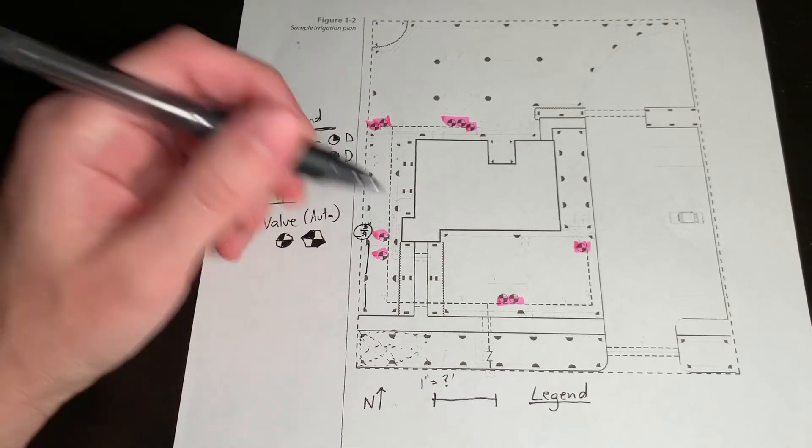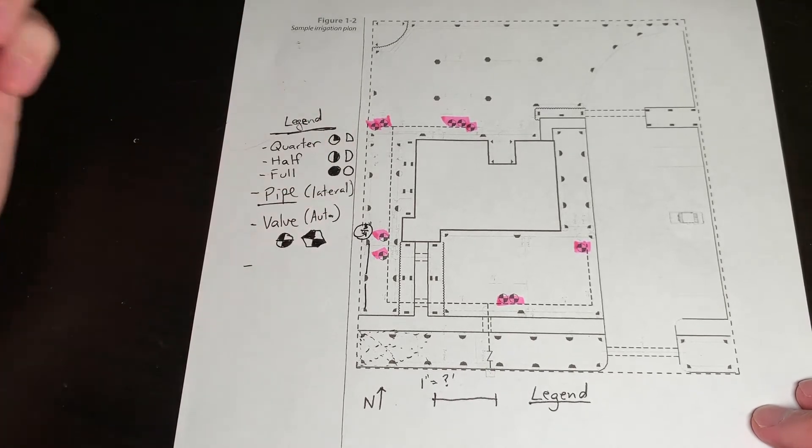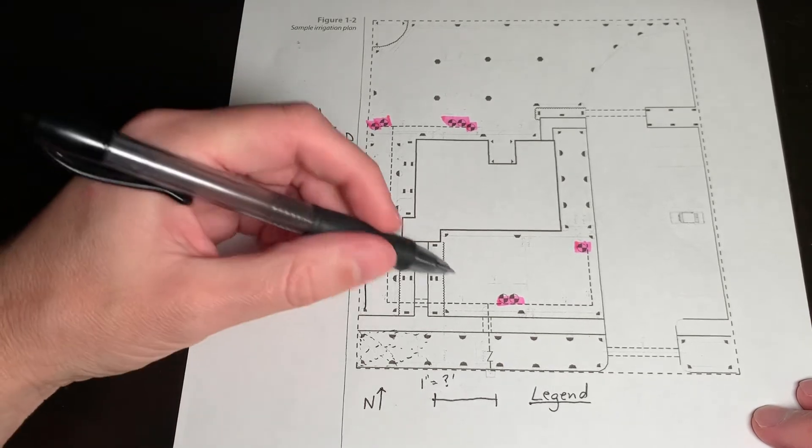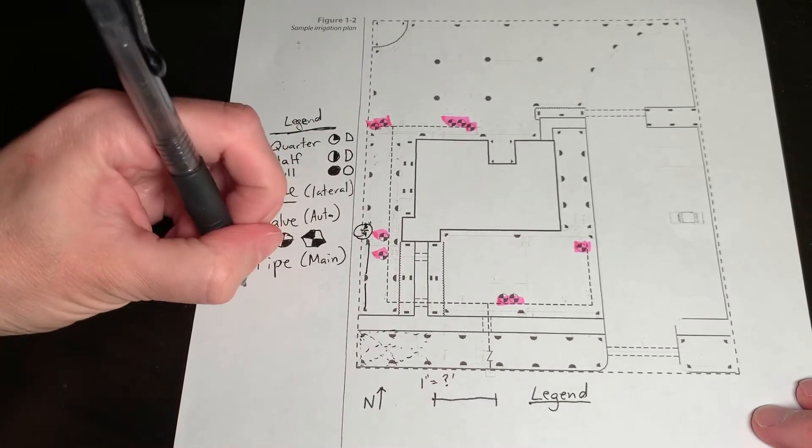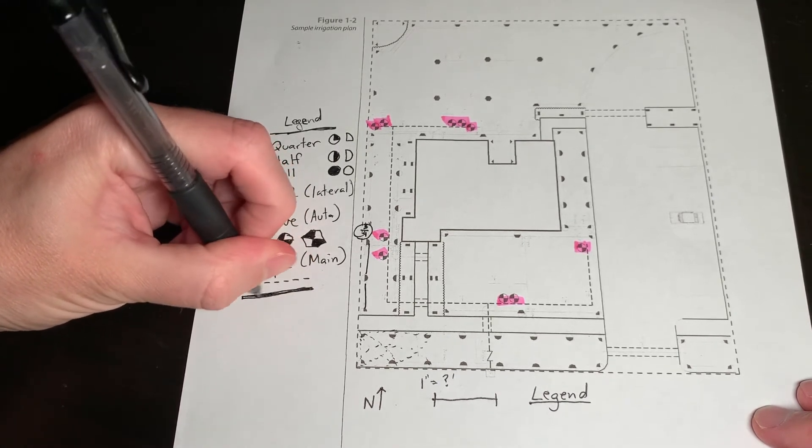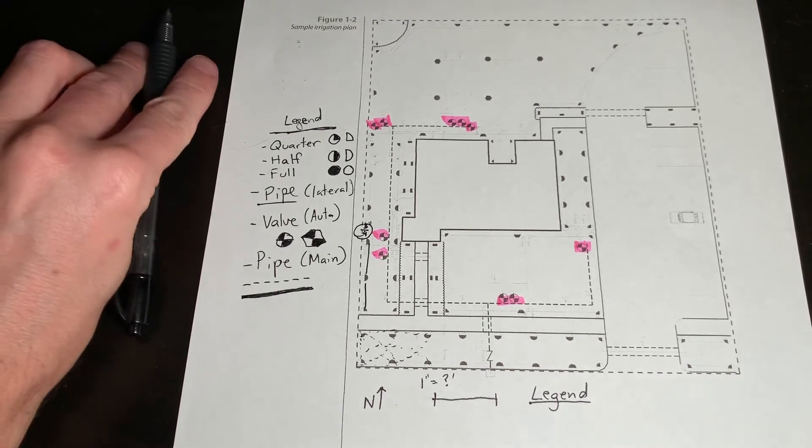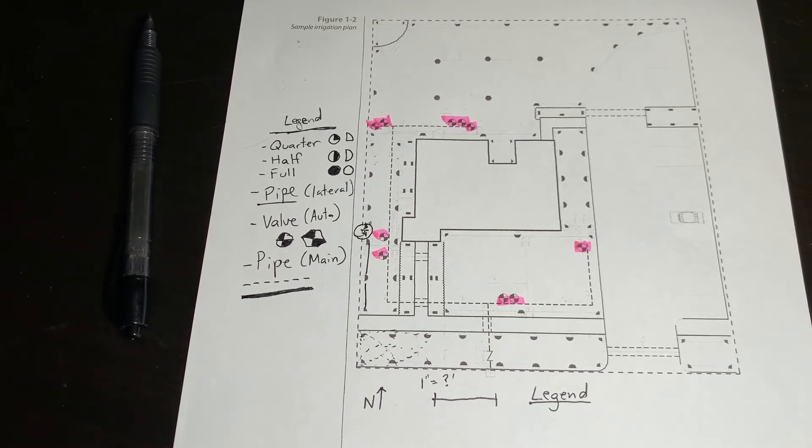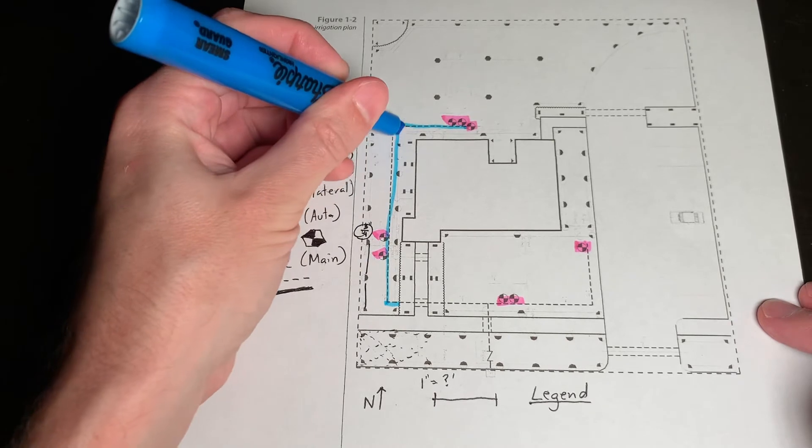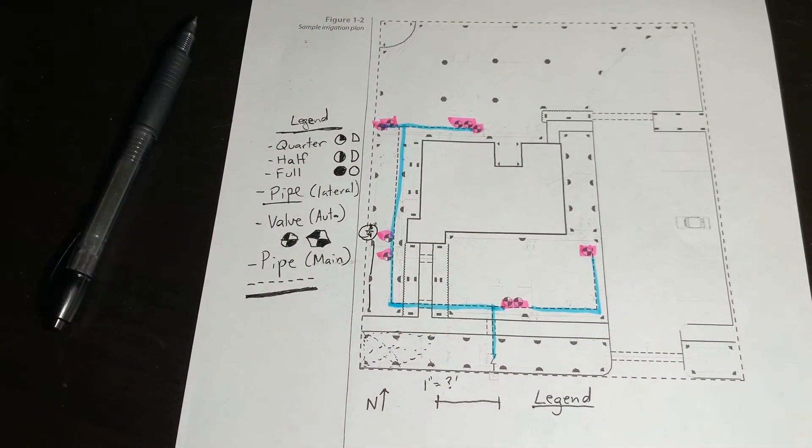And then the valves are connected to main line. The previous pipe is called lateral line. And then we'll have main line. On this plan, it's indicated as a thick dotted line. So we'll indicate that. But oftentimes it's literally just a double thick line. Hand drawn, you would just make it a little bit thicker, but a computer can double the thickness. So then we can see the main line and it's a little bit difficult to differentiate it from the property line because everything's dashed. There's our main line.